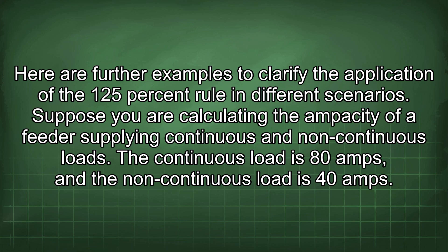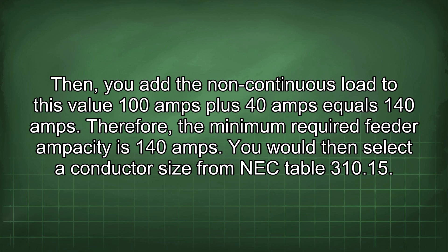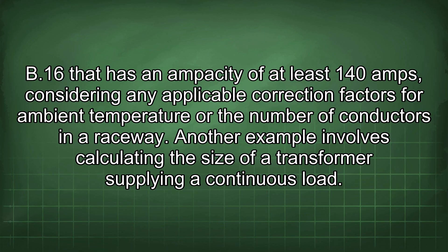Suppose you are calculating the ampacity of a feeder supplying continuous and non-continuous loads. The continuous load is 80 amps and the non-continuous load is 40 amps. According to the NEC, you must size the feeder to carry at least 125% of the continuous load plus the non-continuous load. First, multiply the continuous load by 1.25: 80 amps × 1.25 = 100 amps. Then add the non-continuous load: 100 amps + 40 amps = 140 amps. Therefore, the minimum required feeder ampacity is 140 amps. Select a conductor size from NEC table 310.15(B)(16) with an ampacity of at least 140 amps, considering any applicable correction factors.